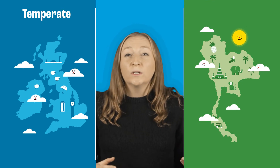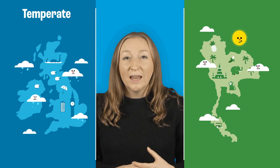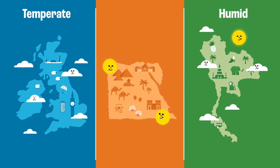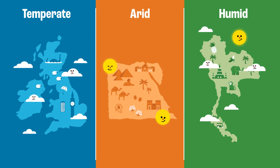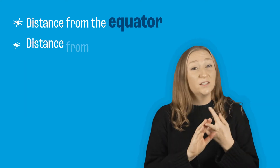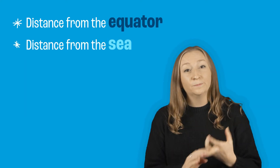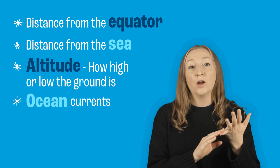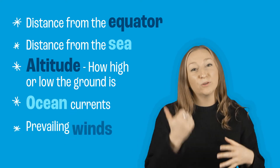Other types of climate are tropical, like in Thailand, which is hot and wet, or desert climate, like in Egypt, which is hot and dry or arid. The climate of a country depends on several different things: distance from the equator, distance from the sea, altitude or how high or low the ground is, ocean currents and prevailing winds.